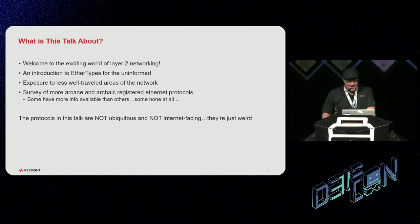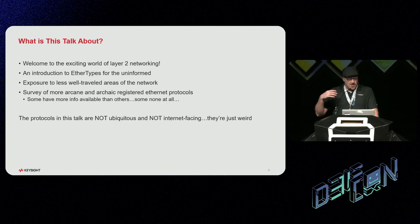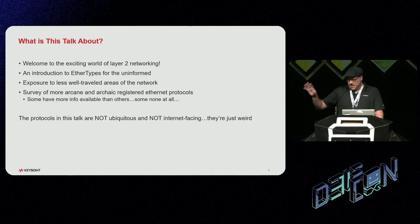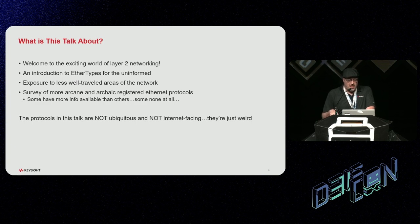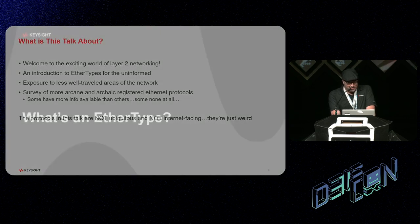A couple of ground rules about this talk: we're going to be diving into the wonderful world of layer two networking. Everybody always does layer three and above, but all the cool kids hang out on layer two. This is basically a survey of lots of different really weird ethertypes — not common, not ubiquitous. These are local network only, no internet-facing protocols — just layer two Ethernet protocols that may or may not be a good idea to have on the network.